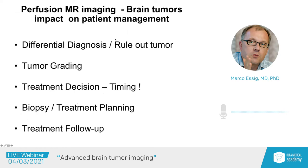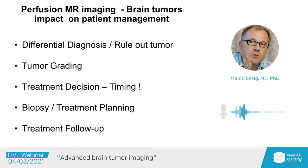In brain tumors, perfusion imaging can help rule out a tumor by differentiating tumoral from non-tumoral tissue. If a tumor is confirmed, perfusion imaging can be used for tumor grading, treatment decision and timing — for example, distinguishing low-grade tumors that may be watched-and-waited from high-grade tumors needing immediate treatment. It can also guide biopsy and treatment planning to target the most malignant tumor part, and it is used for treatment follow-up.